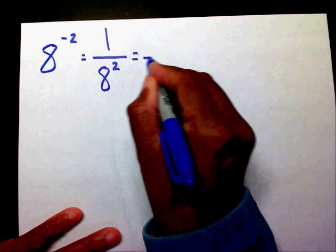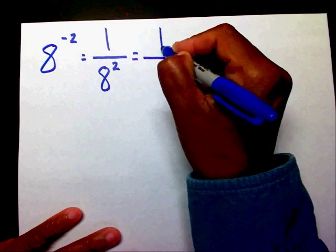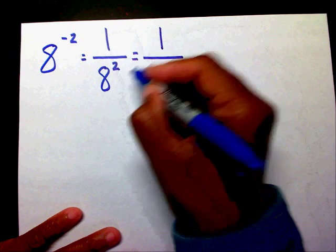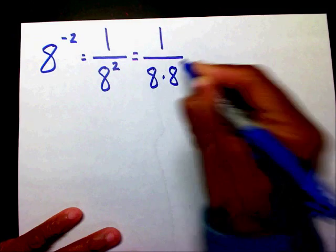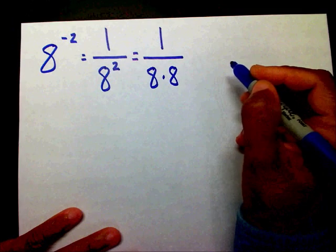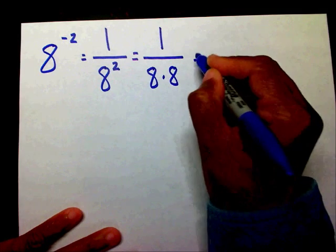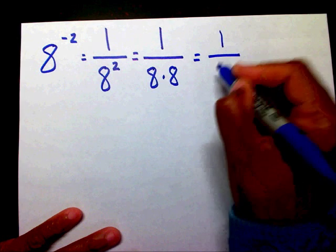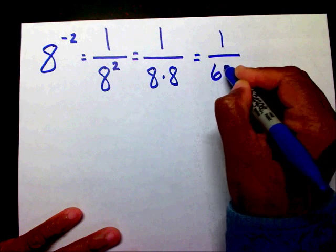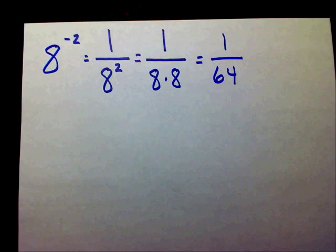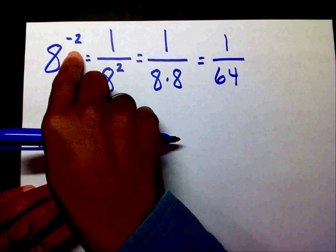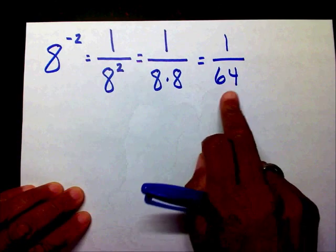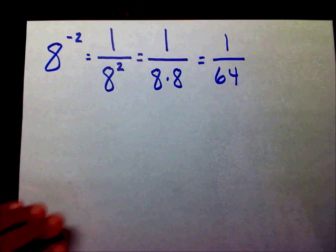We can simplify this even more. We can bring our 1 over, and we know 8 to the 2nd power means 8 times 8. And 8 times 8 equals 64. So we can say that 8 to the negative 2nd power is 1 over 64 — 1 sixty-fourth.